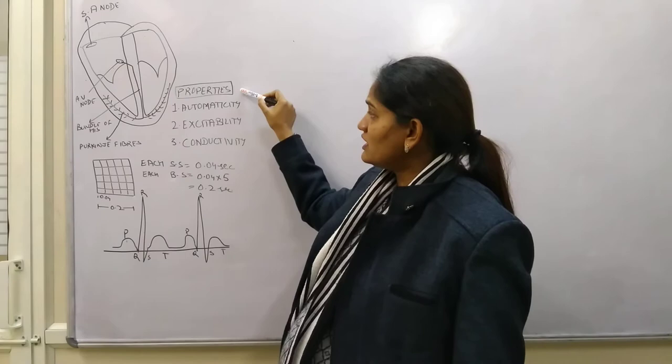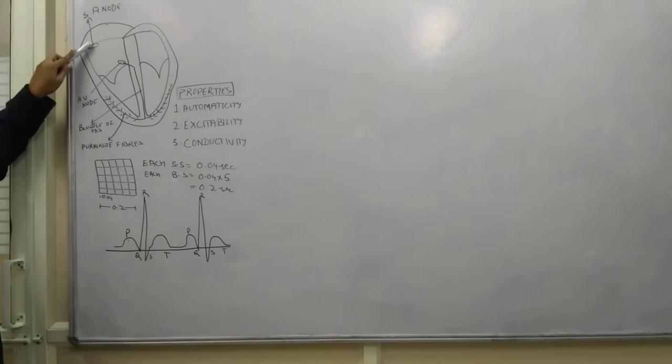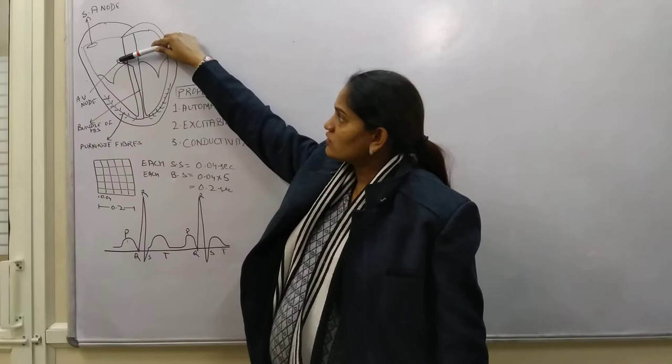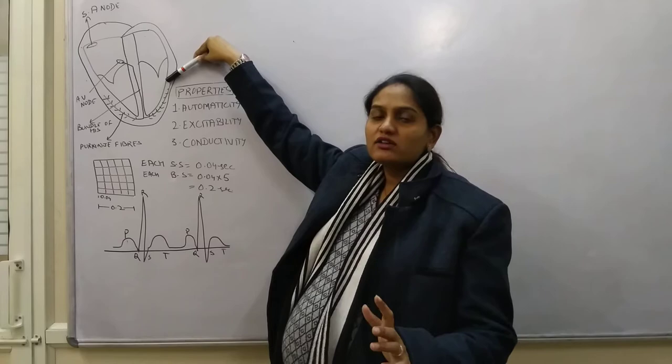We discussed that the heart's muscles have three specialised properties: automaticity, excitability, and conductivity. We also discussed about the cardiac conduction system. The SA node, which is known as the pacemaker of the heart, initiates the electrical impulse. The impulse travels to the AV node, then to the bundle of His, and from there travels towards the Purkinje fibers and the ventricles, completing the cardiac conduction cycle.